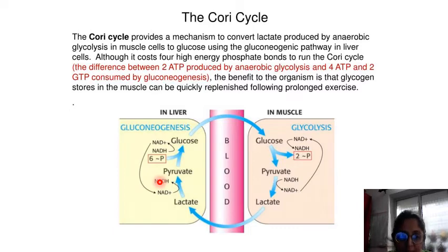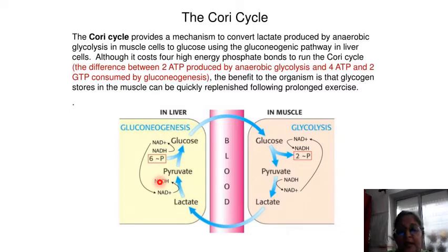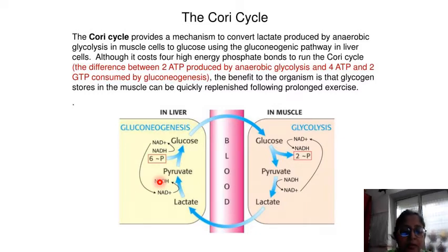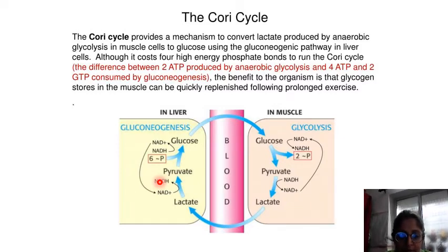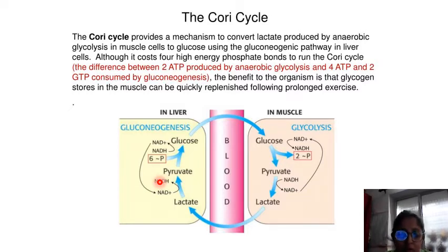Instead of accumulating inside muscle cells, lactate produced by anaerobic glycolysis is taken up by the liver — this initiates the other half of the Cori Cycle. In the liver, gluconeogenesis occurs, which from an intuitive perspective reverses both glycolysis and fermentation. The glucose is then supplied to the muscle through the bloodstream and fed into further glycolysis reactions. If muscle activity has stopped, the glucose is used to replenish glycogen stores through glycogenesis.